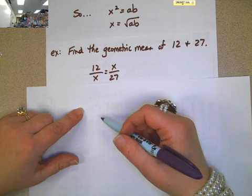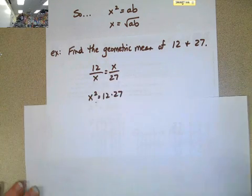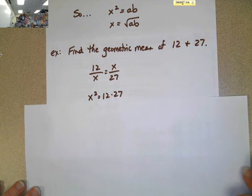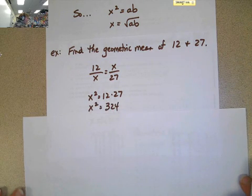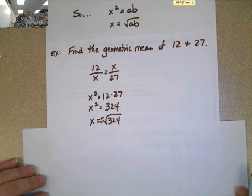So, now, we're just going to go ahead and finish this. We're going to get X squared equals whatever 12 times 27 is. 12 times 27 is 324. And then, of course, we're going to take the square root of 324.